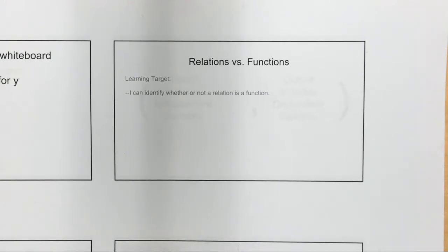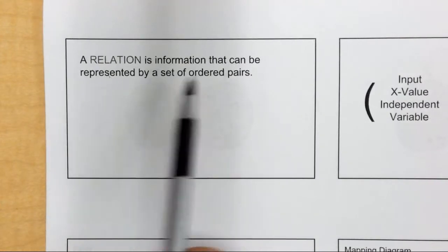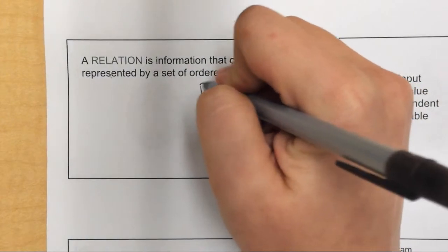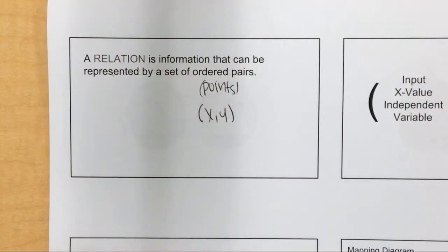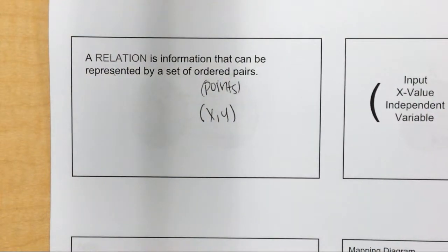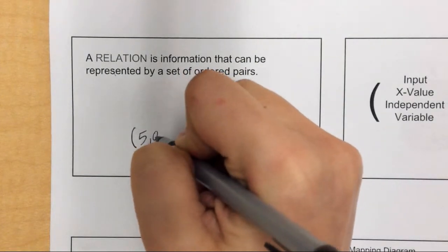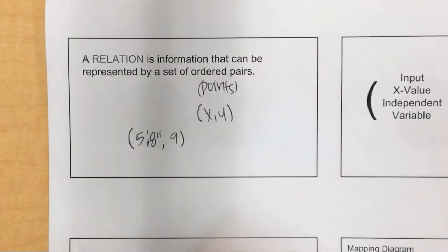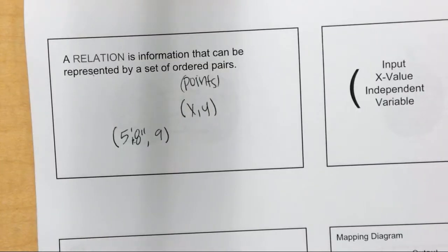First, let's get some definitions written down. A relation is information that can be represented by a set of ordered pairs. An ordered pair just means points, something like (x, y). For example, your height — I'm 5'8" — versus your shoe size, 9. I can write this as a point, therefore it's a relation.